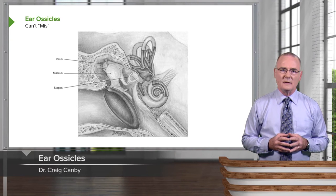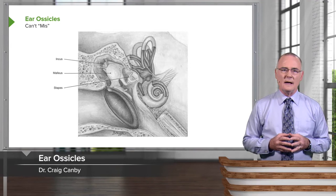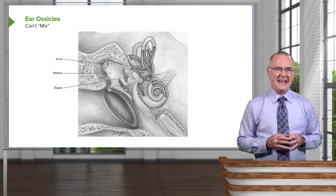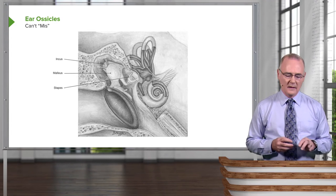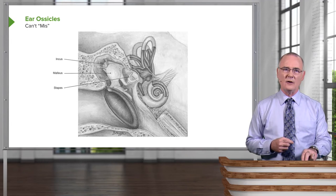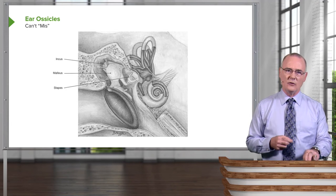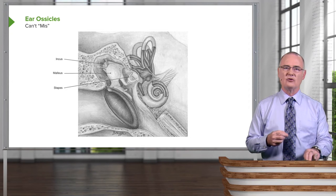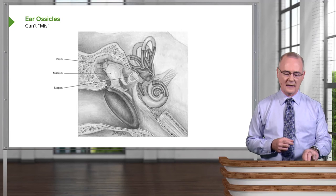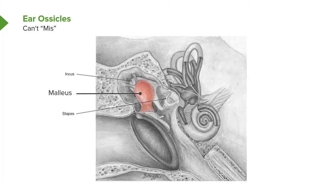The ear ossicles, prominent features of the middle ear, can be remembered by the can't-miss MIS mnemonic. This describes the order of the ear ossicles from the tympanic membrane to the oval window, which is the entry point for transmission of sound waves into the cochlear apparatus. The M stands for malleus, seen highlighted here. It has a component attached to the tympanic membrane, so when the tympanic membrane receives sound waves, it starts movement of the malleus at the beginning of the ear ossicle chain.